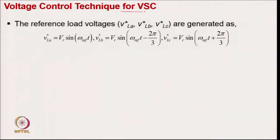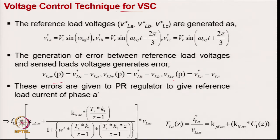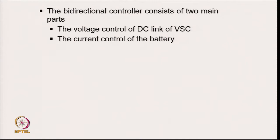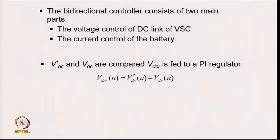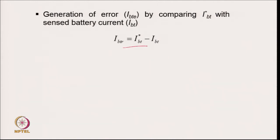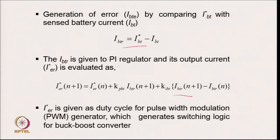This is in islanding/voltage control mode: we have three-phase reference voltage, voltage error, and pass it to calculate reference load current for all three phases. For bi-directional current control, we have the DC link voltage, sense the DC link voltage, pass through a low-pass filter so only the DC component remains, use a PI controller to give battery reference current, sense battery current, and again use PI control. The output is compared with a sawtooth signal to generate gating signals for the two devices of the bi-directional buck-boost converter. The bi-directional control has two main parts: voltage control of DC link voltage and current control of the battery.